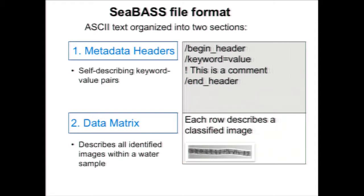I'm using SEABASS as an example because that's what I'm most familiar with, though we hope to see other repositories adopt a similar format. SEABASS is a NASA data repository — if you are funded by NASA for a field campaign, you must submit your data in a specific format. This format includes two parts: the metadata headers, which include geolocations, times, and station information, and a data matrix containing all of your measured products.